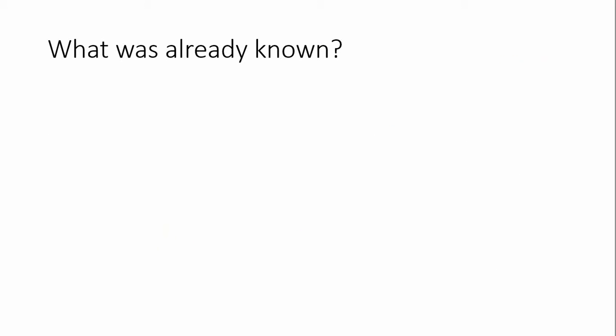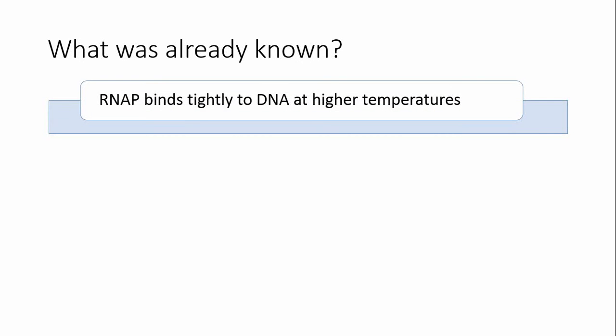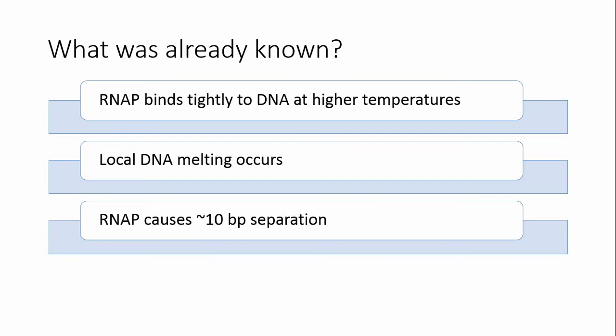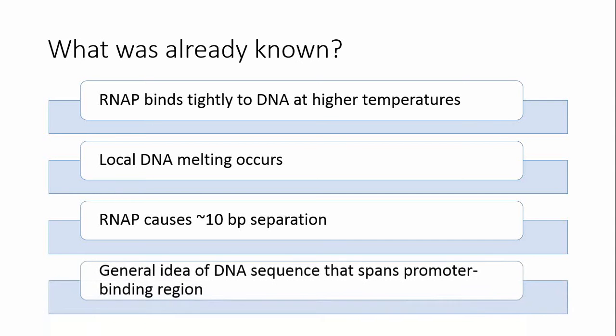To start, what was already known before this experiment began? First, Chamberlain studies had suggested that tight binding occurs between DNA and RNA polymerase, or RNAP. The binding is stabilized at high temperatures, providing evidence for local DNA melting so that incoming nucleotides can pair and form mRNA. There was further evidence after measuring the hyperchromic shift that supported the idea of DNA strand separation, and more specifically, the idea that RNA polymerase causes a strand separation of about 10 base pairs. Last, the experimenter had a general idea of the sequence in which the promoter binding region was located. We will see more evidence of that later.